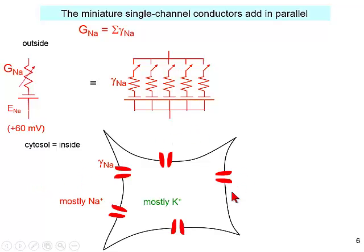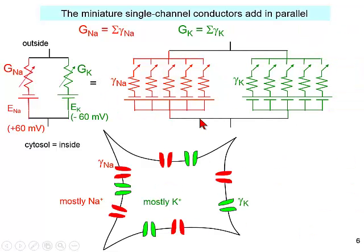But there are complications. The complications are that there are several types of channels in the membrane. In particular, not only are there sodium channels, but there are also potassium channels. Each potassium channel has its own conductance, which may differ from the conductance for the sodium channel, its own switch whether that potassium channel is open or closed, and its own battery, which is the Nernst potential for the potassium channel.